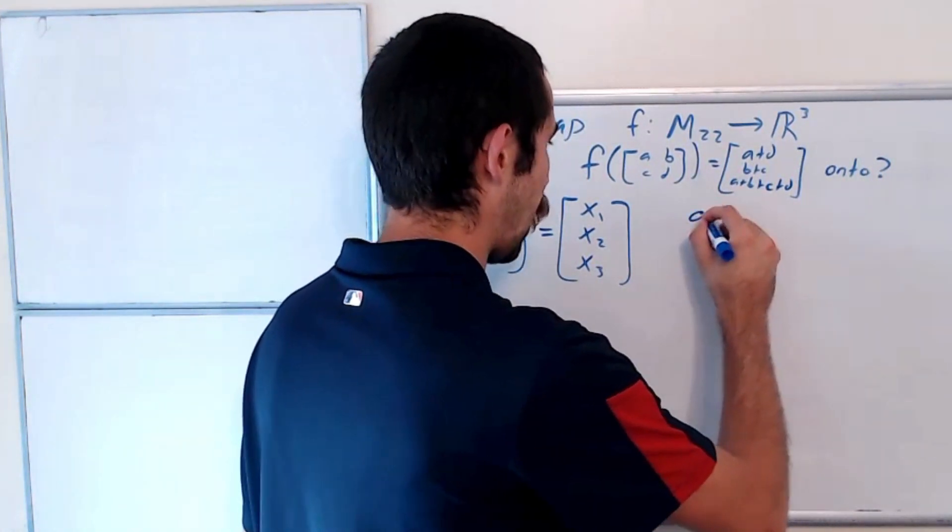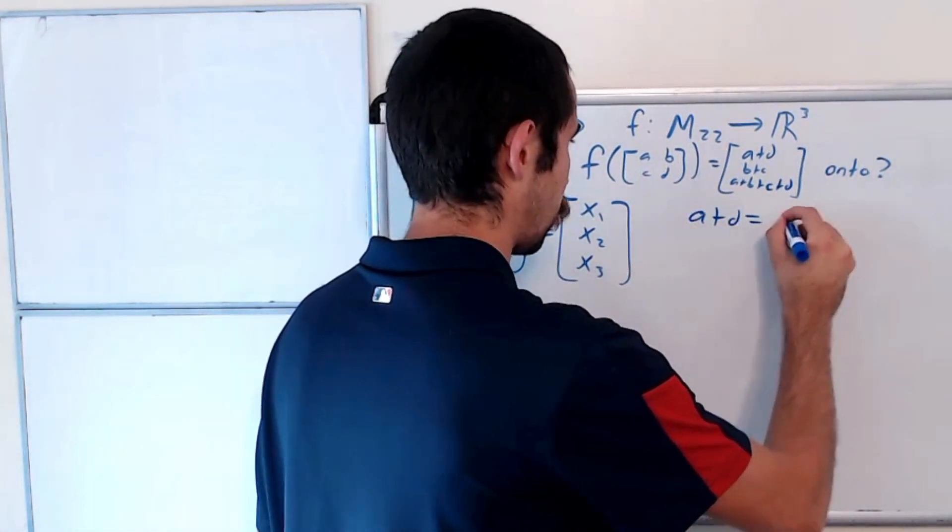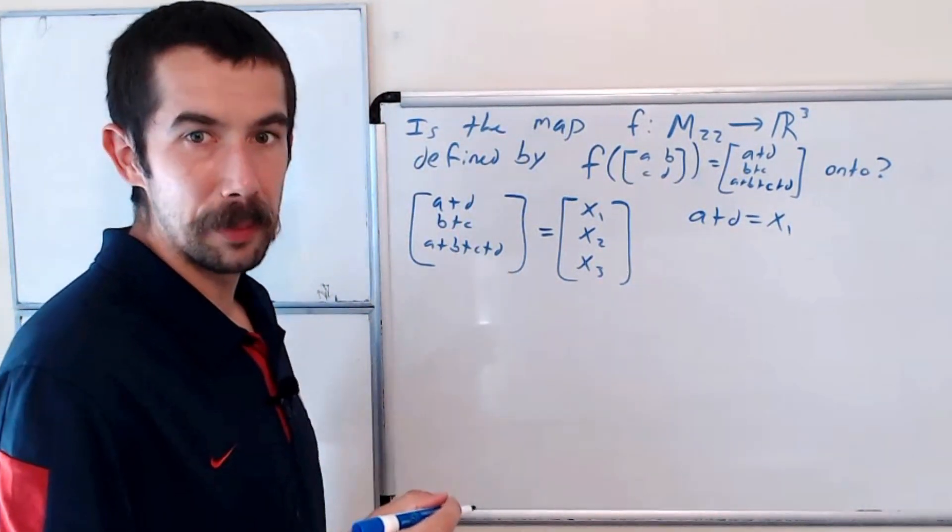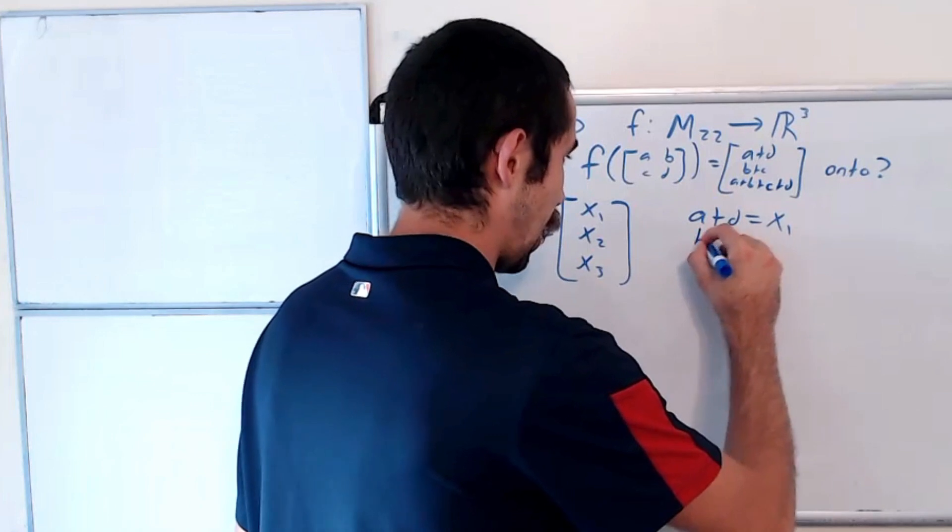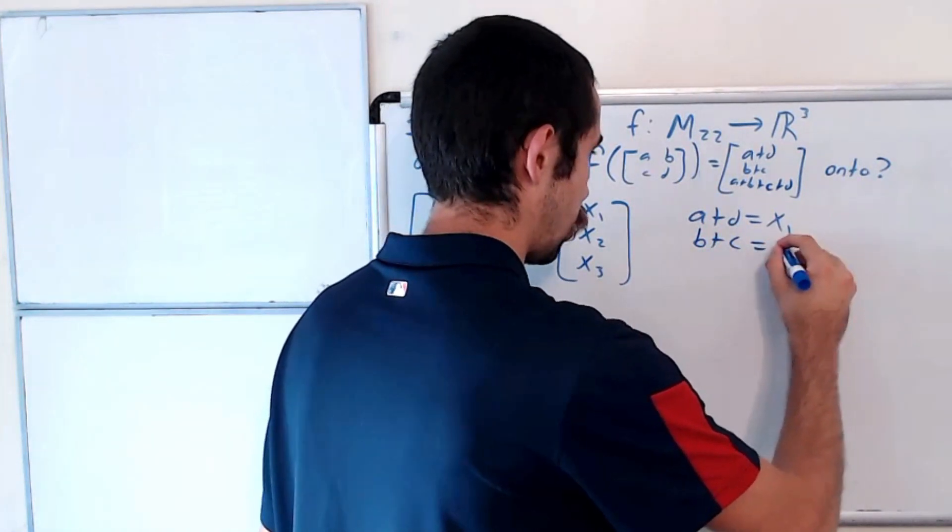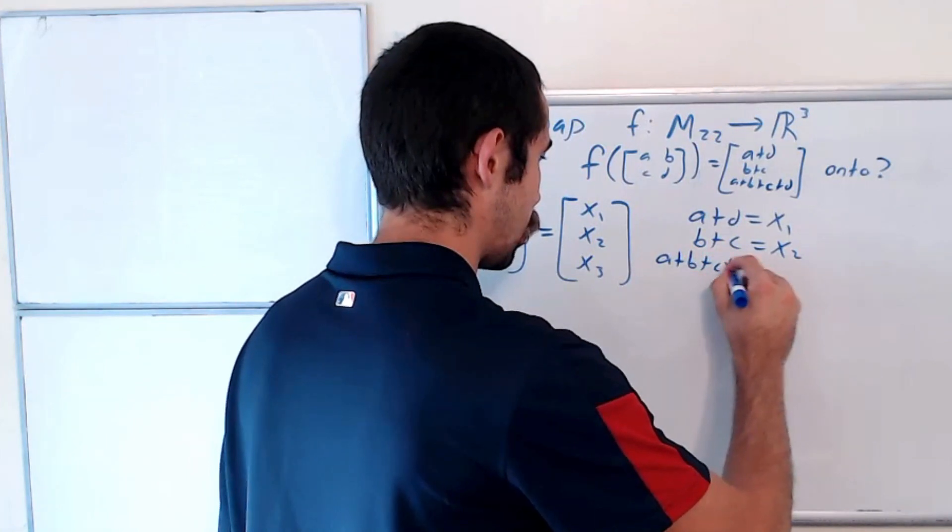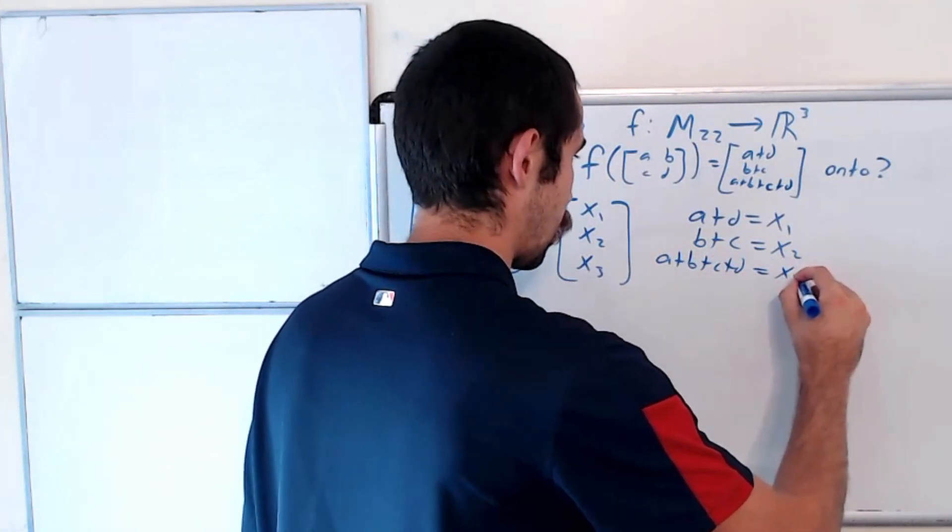So this first equation would be A plus D is equal to X1. The next equation says that B plus C is equal to X2. And the last equation is A plus B plus C plus D is equal to X3.